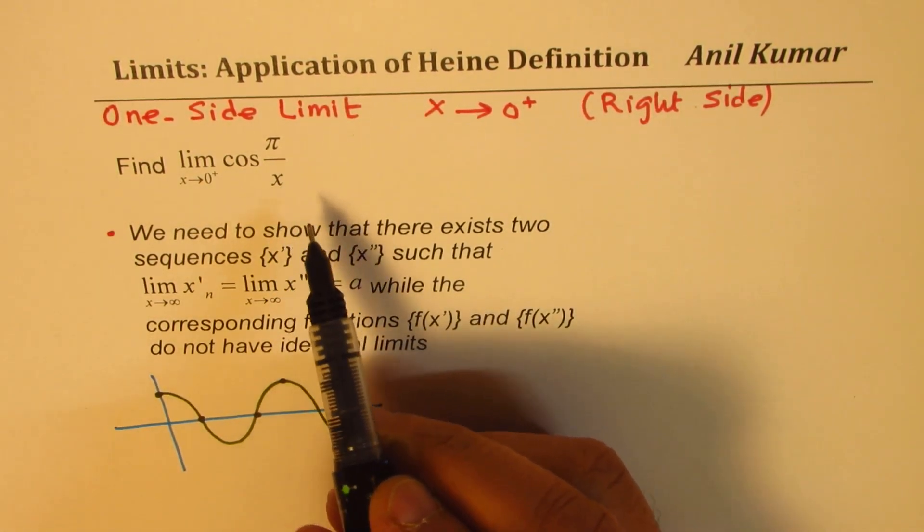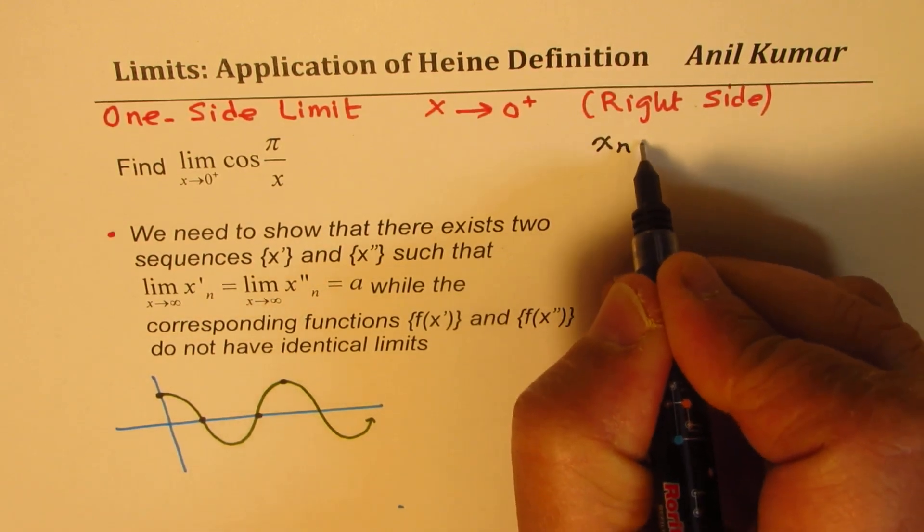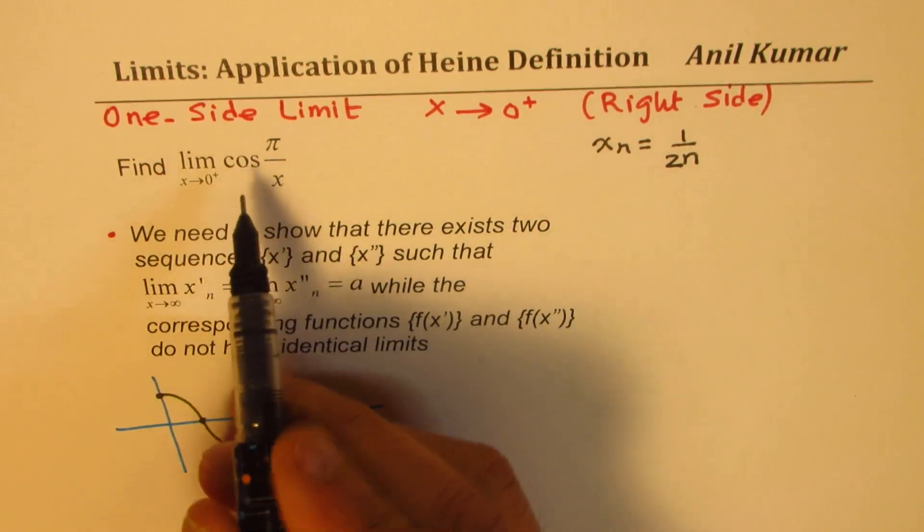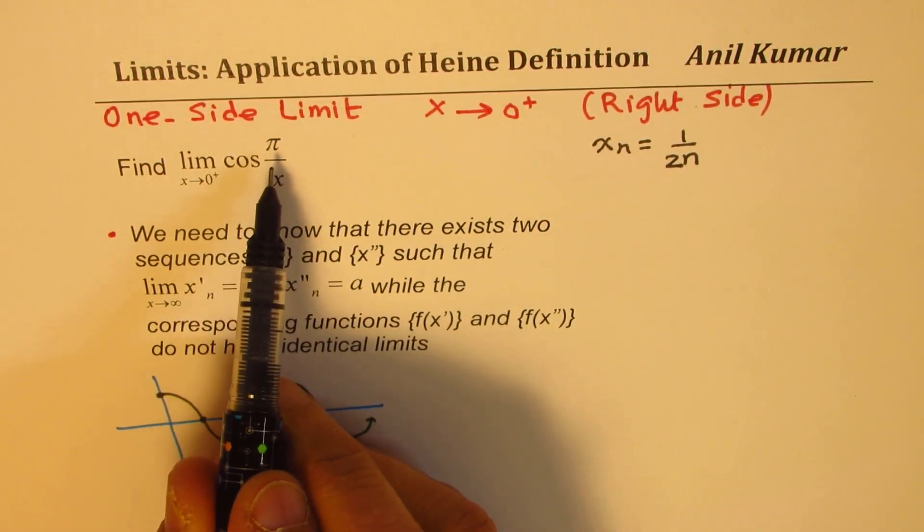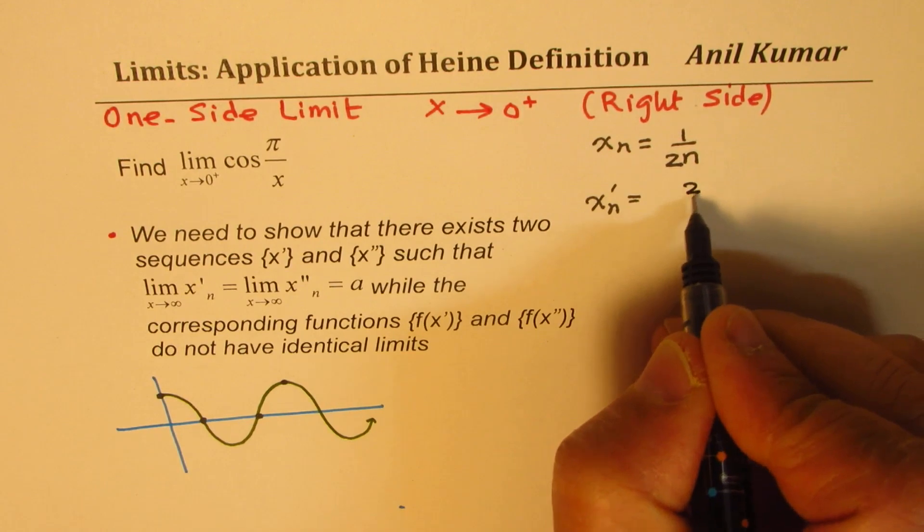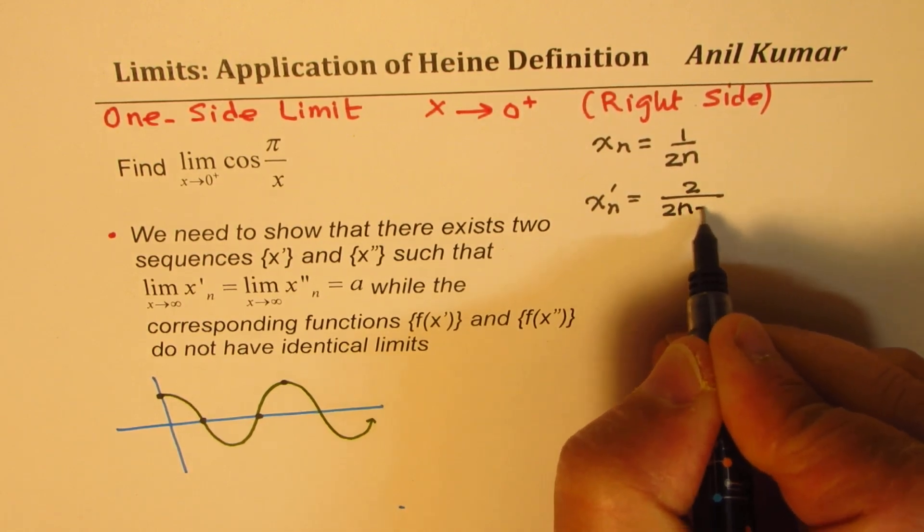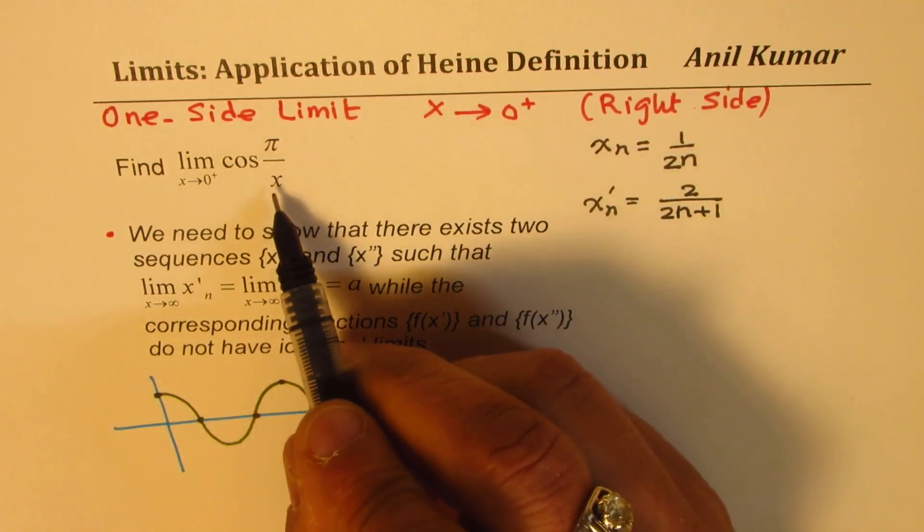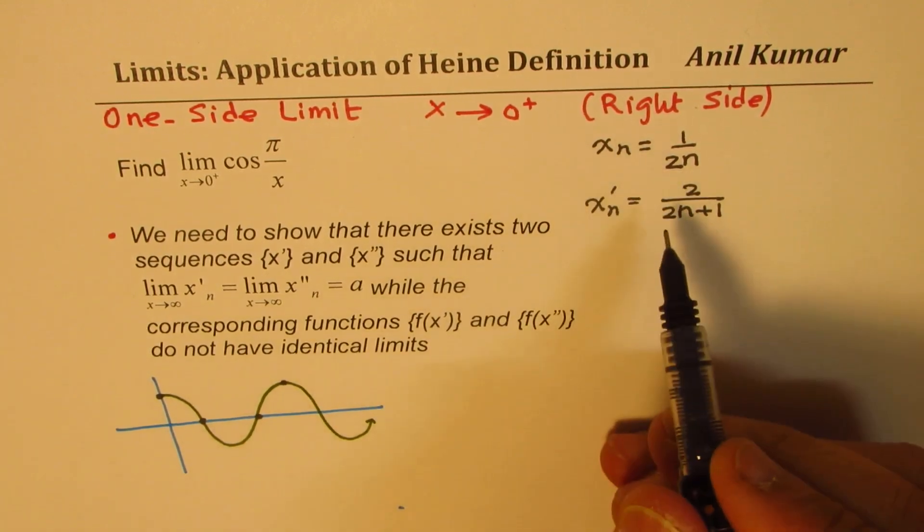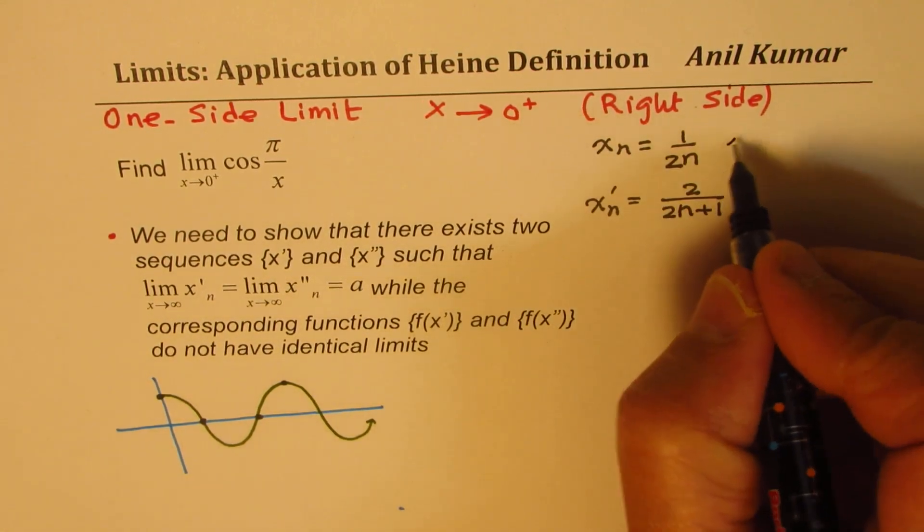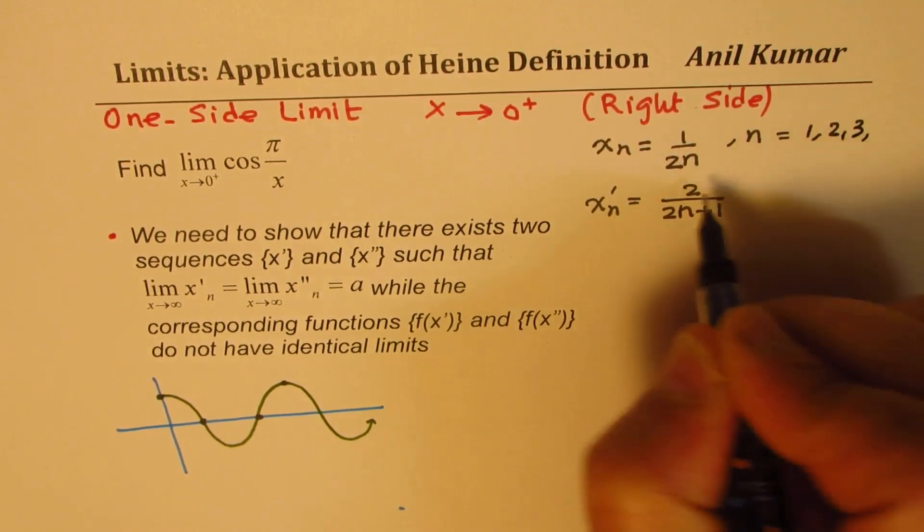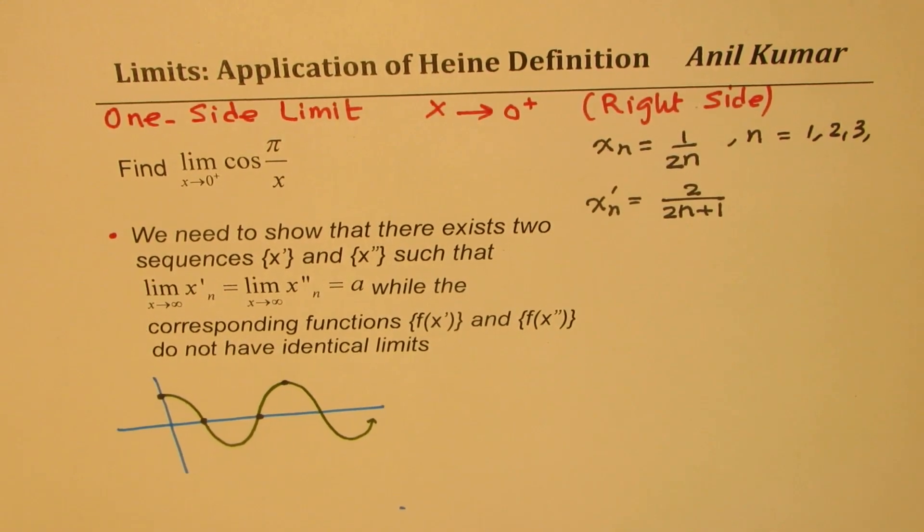Since x is in the denominator, we are choosing the functions as xn equals 1 over 2n. So when I flip it, it becomes 2n π. And the other function which I am using is xn dash, which I am taking as 2 over 2n plus 1, because when I flip it with this I get 2n plus 1 times π by 2. So these are the two functions which I am selecting where the value of n is set of natural numbers. It cannot be 0 since it is in the denominator.